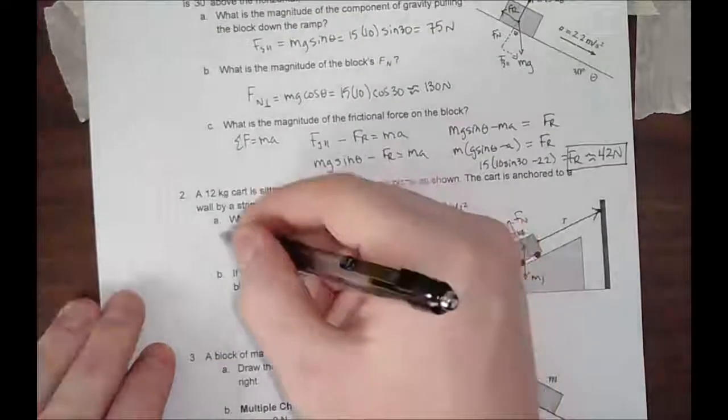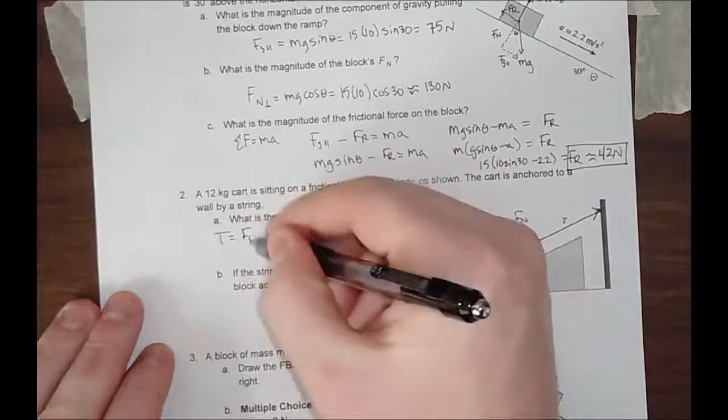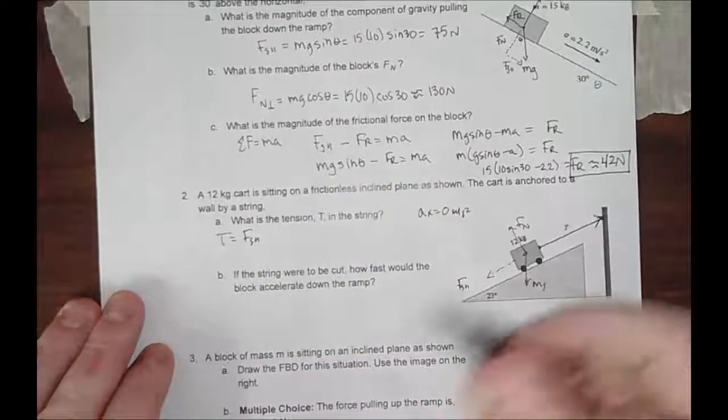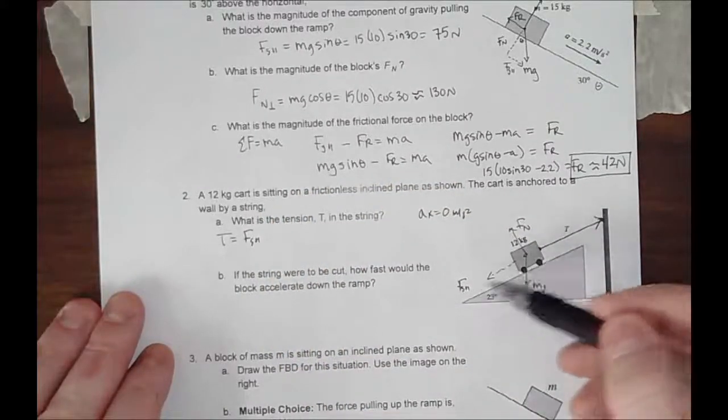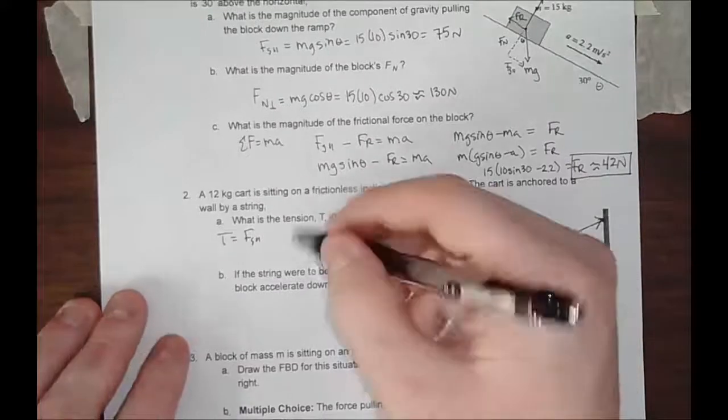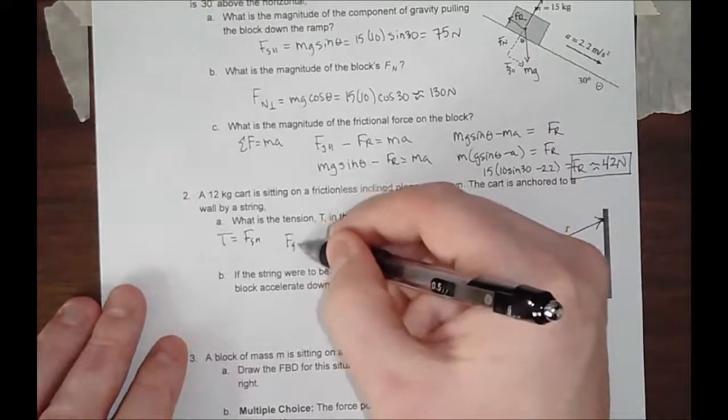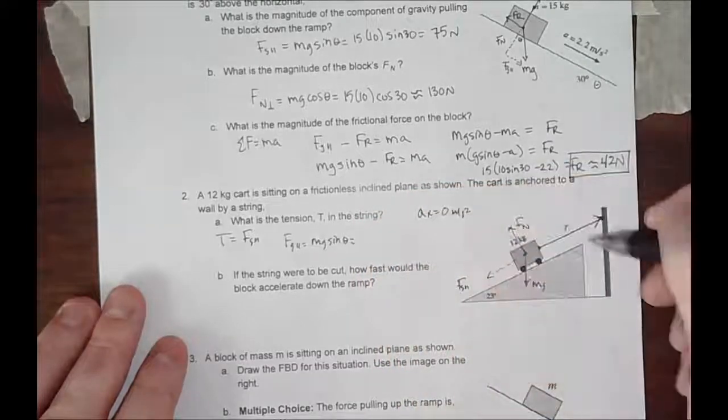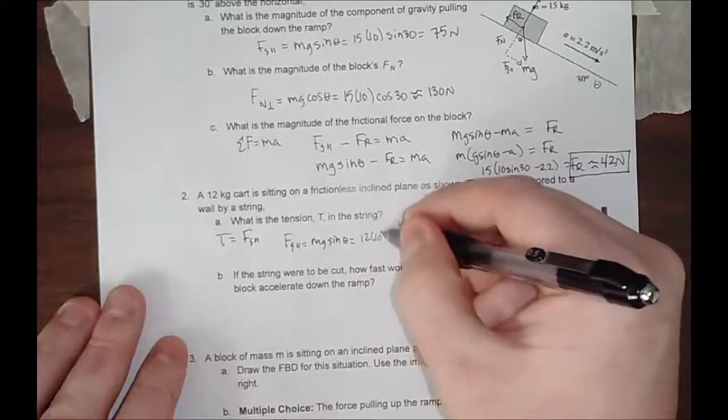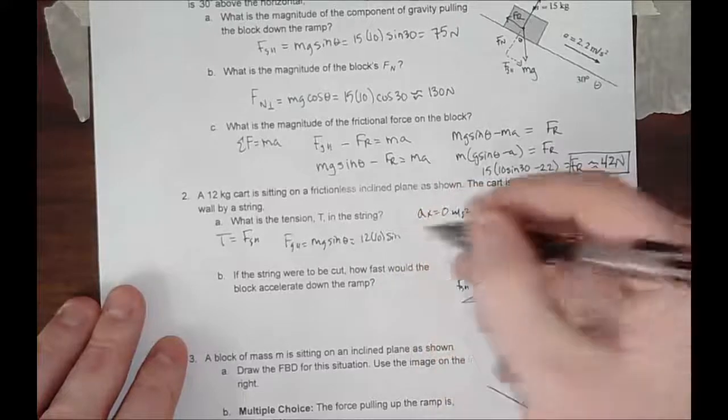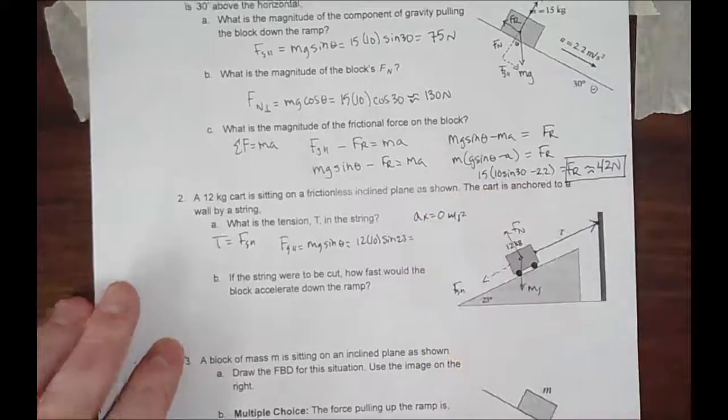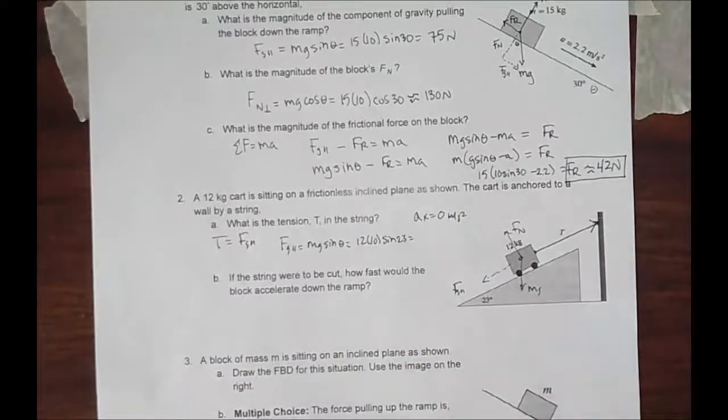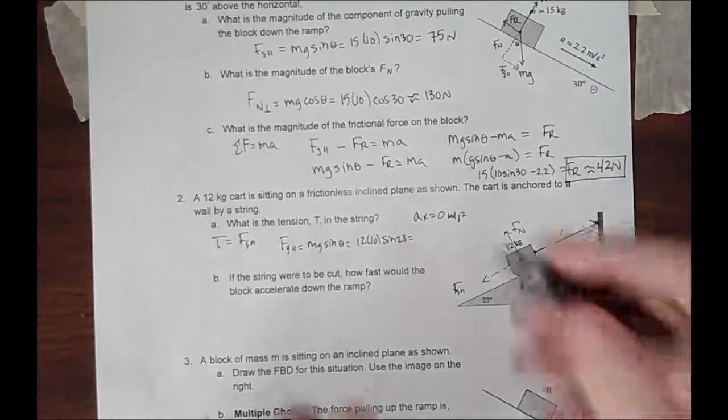The question is now, what is the tension in this rope? It's just going to be equal to this. So the T will be equal to FG parallel. That is the vector component of gravity pulling down the ramp. And that's just going to be the mg sine of theta.